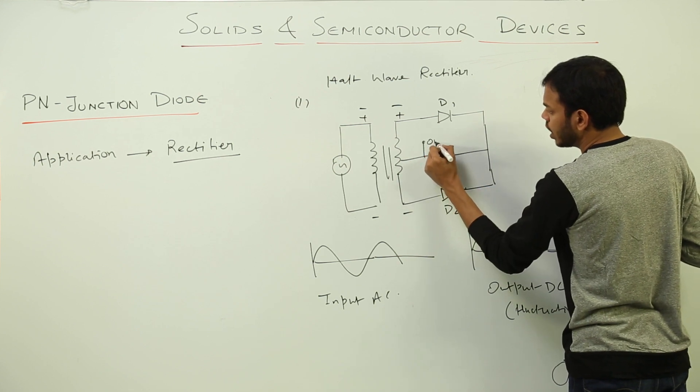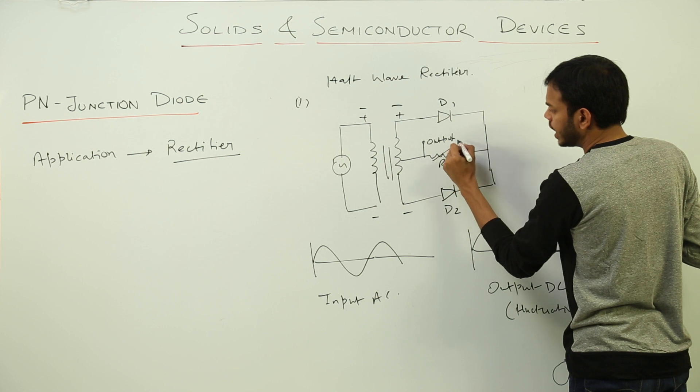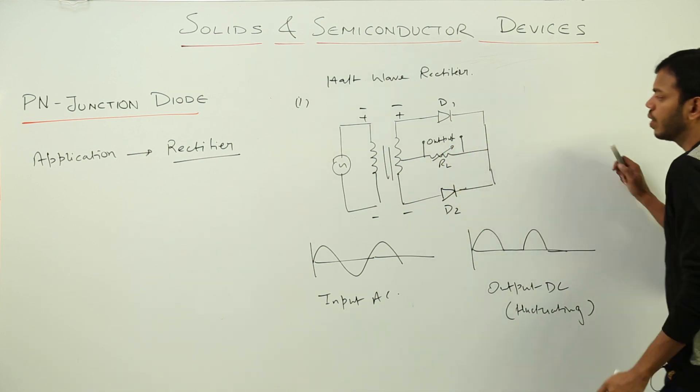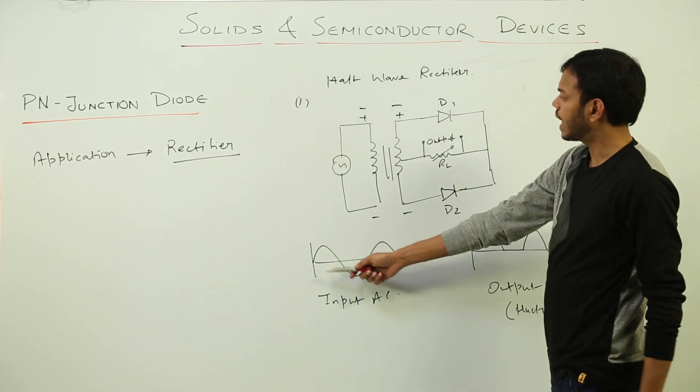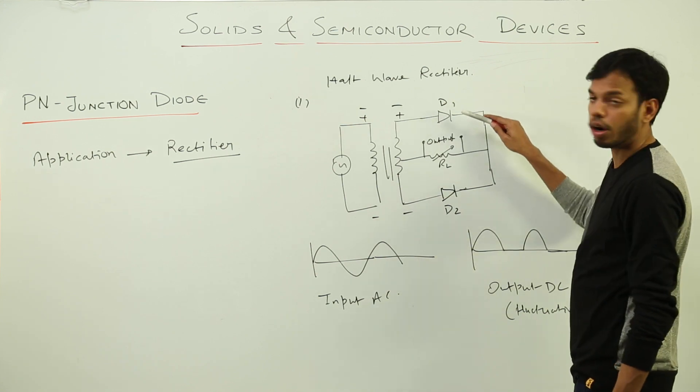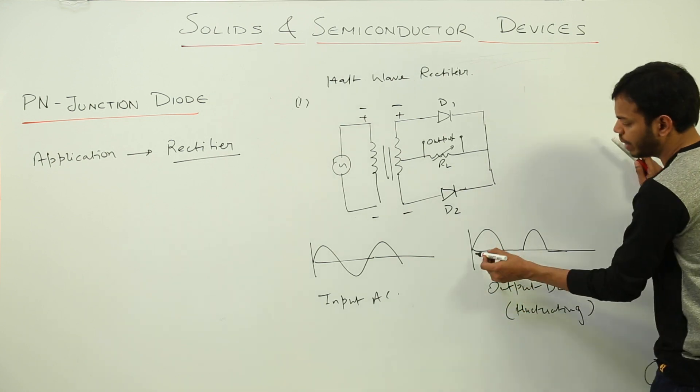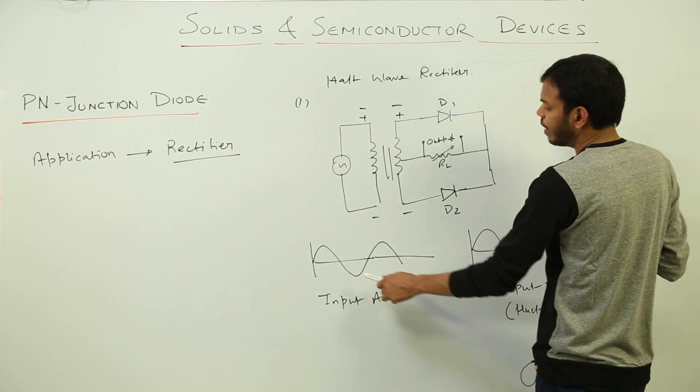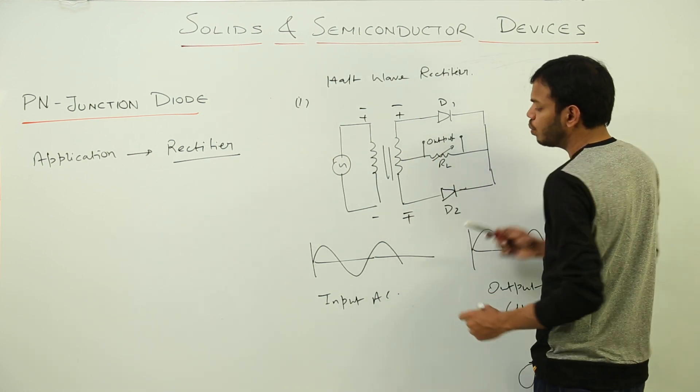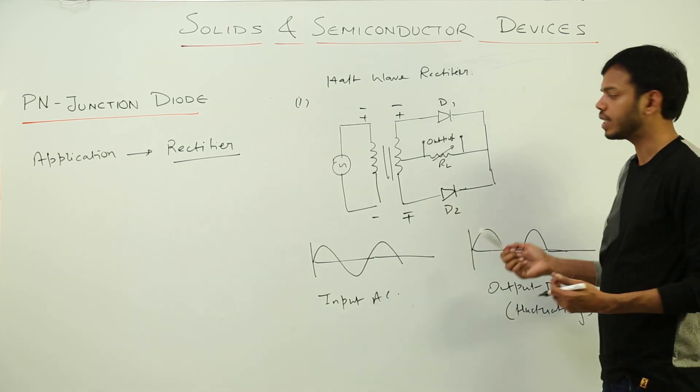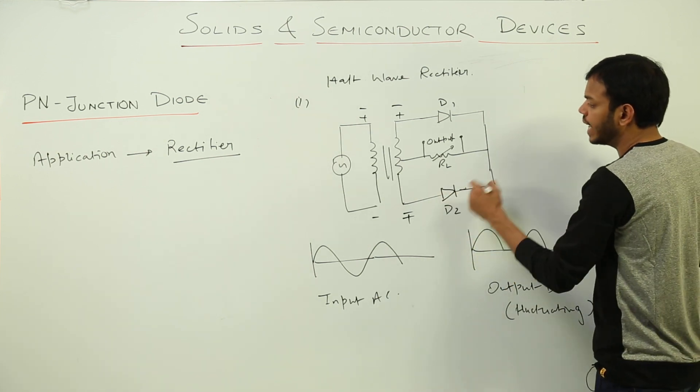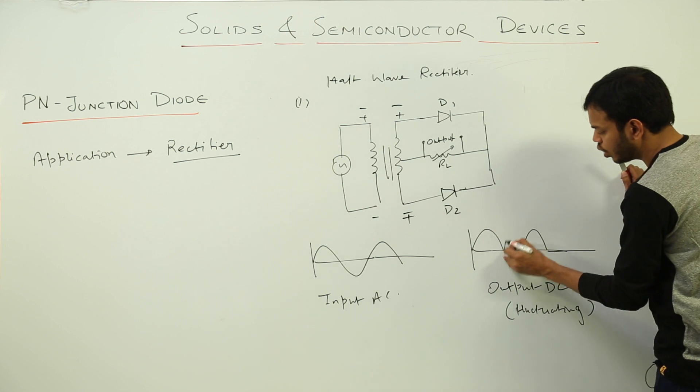Now during the positive half cycle the diode D1 is in forward bias state. So D1 will conduct and you will get a current flow in this direction and there will be an output. During negative half cycle this is reverse bias but D2 becomes or D2 comes into forward bias state. So D2 will conduct and we will again get output from D2.